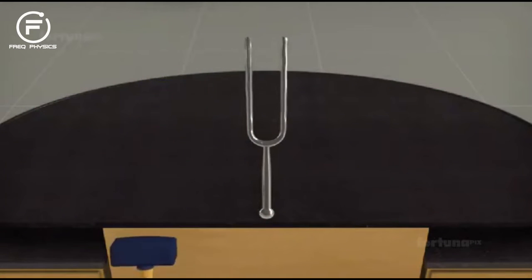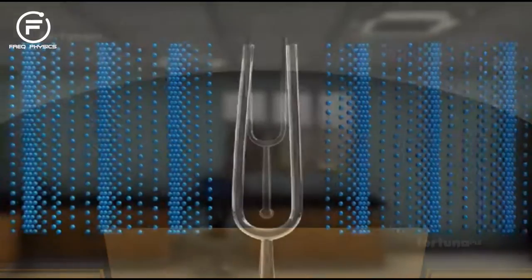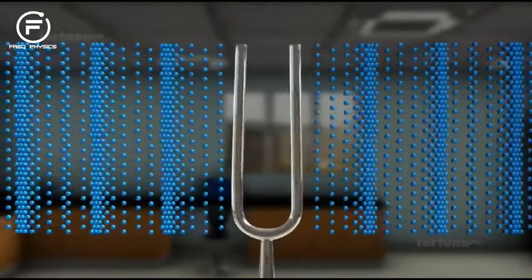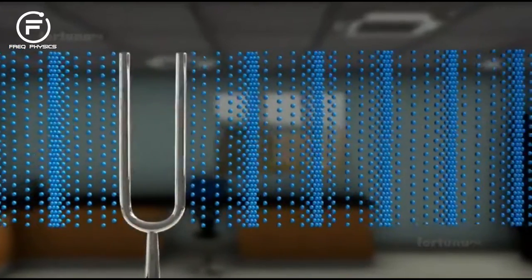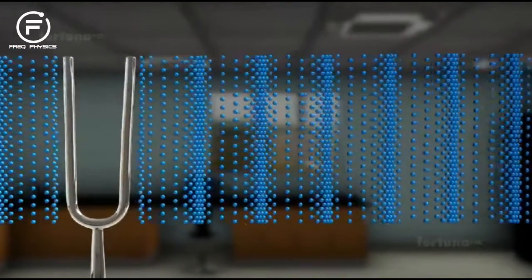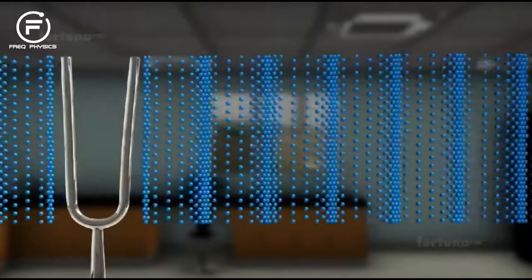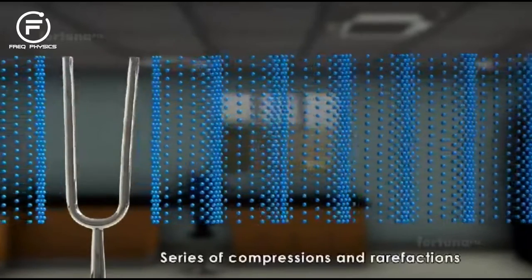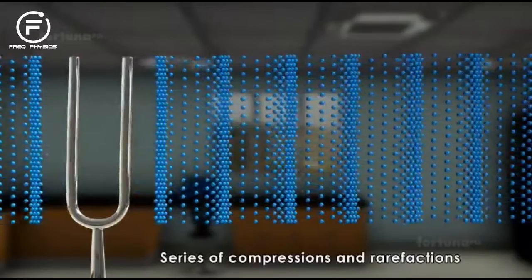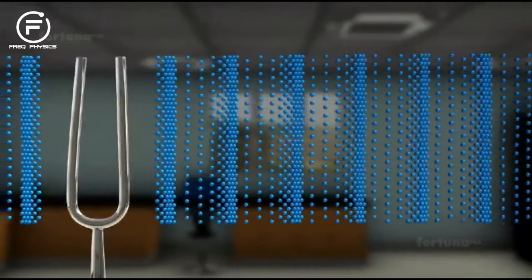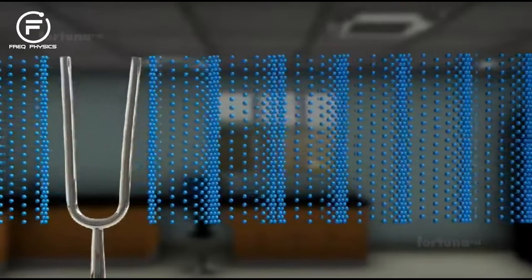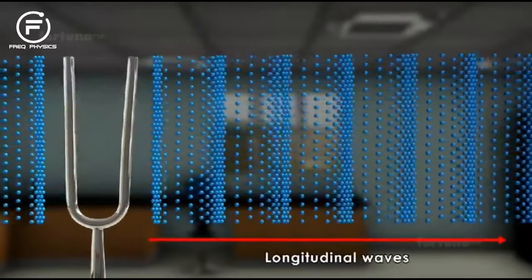As the tines of a tuning fork vibrate back and forth, they disturb the air molecules surrounding them. These disturbances are passed on to adjacent air molecules. The continuous vibration of the tines creates a series of compressions and rarefactions. The sound waves travel in the same direction as the air particles, and for this reason, they are known as longitudinal waves.